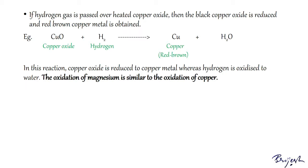In another example, if hydrogen gas is passed over heated CuO, the black CuO is reduced and red-brown copper metal is obtained. In this reaction, CuO is reduced to copper while hydrogen is oxidized to water. The oxidation of magnesium is similar to the oxidation of CuO.